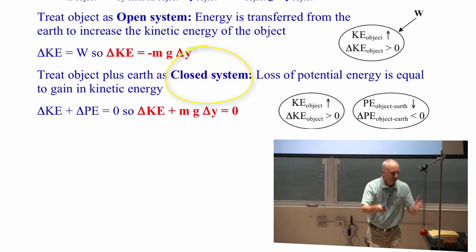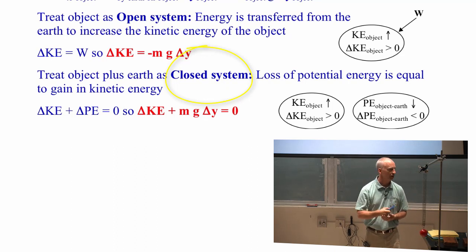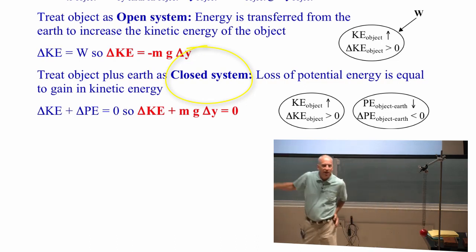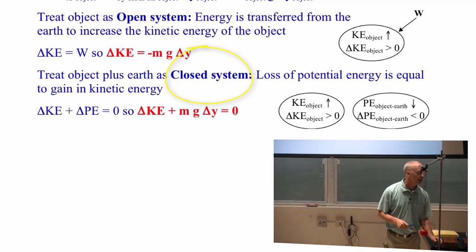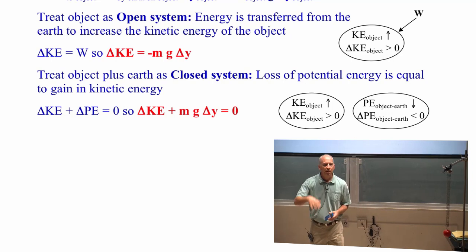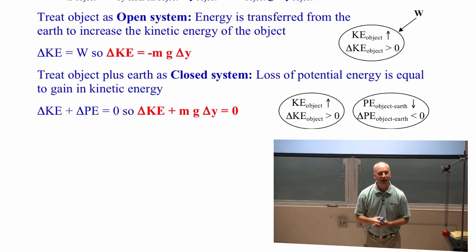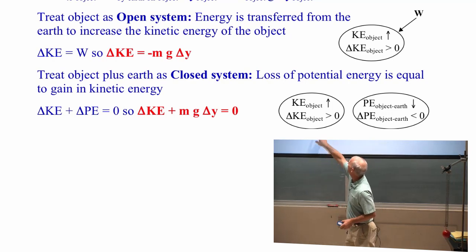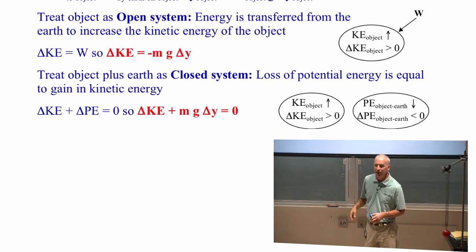For a closed system, include everything — all the things that are interacting. What does the ball interact with? It interacts with the earth. So let's include the earth. Since both the earth and the ball are part of our physical system, there's an interaction energy we have to worry about: the potential energy. Potential energy is an interaction energy between two things in our system. Both the earth and the ball are in our system, so gravitational potential energy is something we have to account for. It's a closed system, so the total change in total energy is zero, and you find that the change in kinetic energy plus the change in gravitational potential energy equals zero.